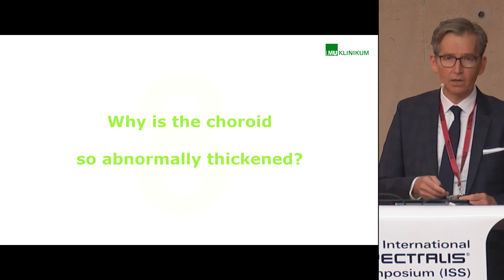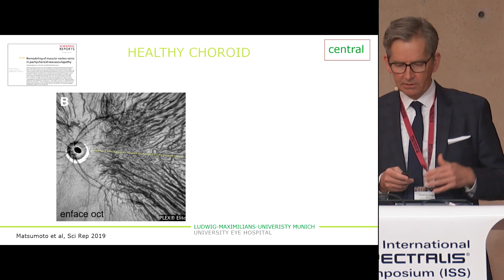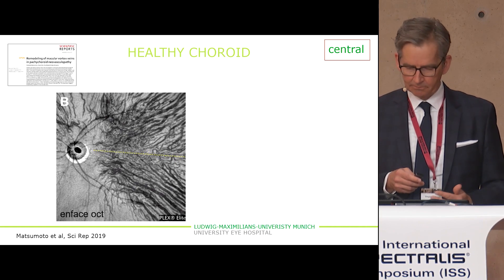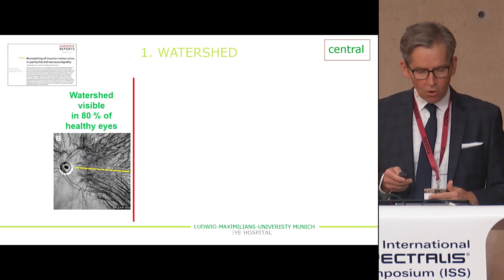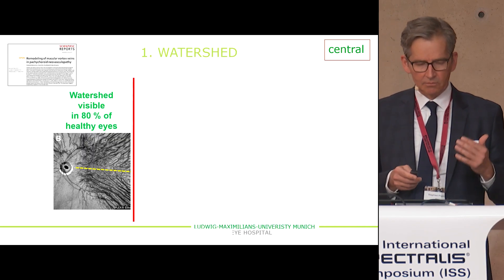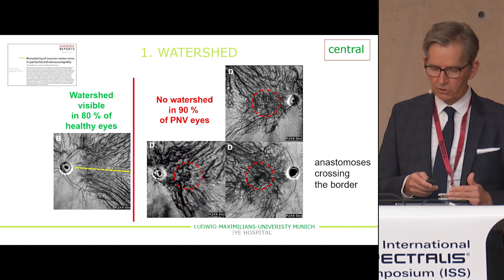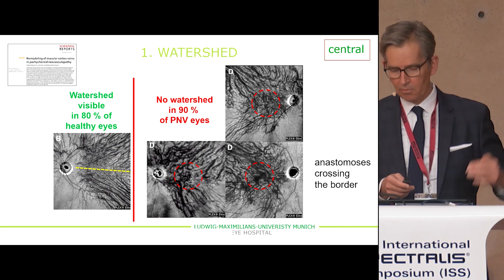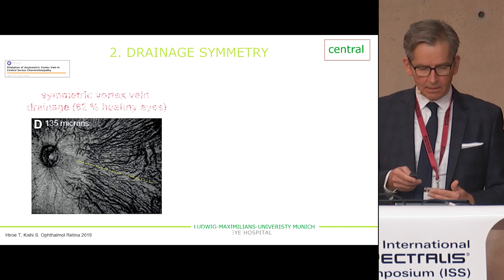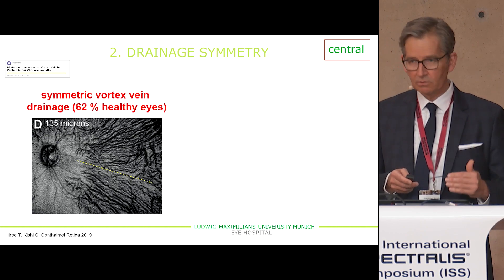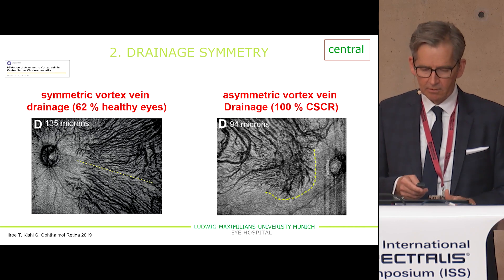Why is the choroid so abnormally thickened? Matsumoto and colleagues in 2019, using En-face OCT, showed that drainage of healthy choroids respects the horizontal watershed — the superior part drains superiorly and the inferior part drains inferiorly. It was shown that 80% of healthy eyes respect the watershed, whereas in contrast, 90% of patients with PNV do not respect this watershed — we see anastomoses crossing the horizontal border. The second abnormality is asymmetry in the vortex veins: in 62% of healthy eyes there are symmetric vortex veins, in contrast to 100% of CSC patients showing asymmetric vortex veins.